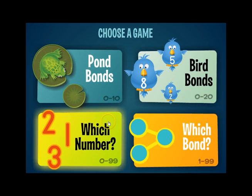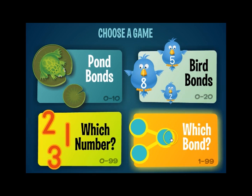Then we have Which Number and Which Bond. These games go all the way up to 99, so they're appropriate for primary grade students who are ready for the challenge of higher digit numbers. They're also appropriate for your third, fourth, and fifth grade students who are still struggling with basic concepts of part and whole and how they relate to addition and subtraction.